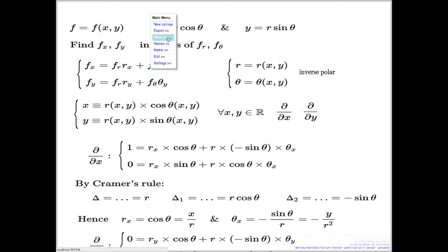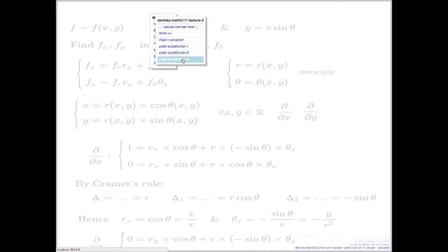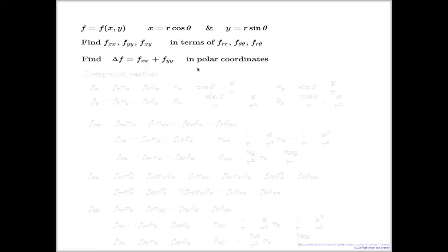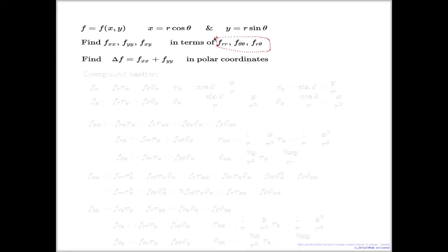Let's look at this example — that's the last example for today. We have the same setting: we have a function with polar substitution, and now I need the second derivatives: f double x, f double y, and the mixed one. I want to do f double x and f double y, not the mixed one, in terms of the second-order polar derivatives. This time we'll follow the second approach, because now we have all of these auxiliary derivatives of the inverse polar map.